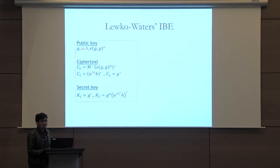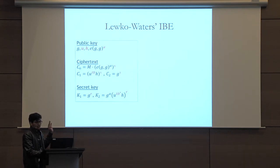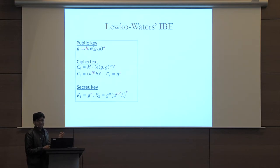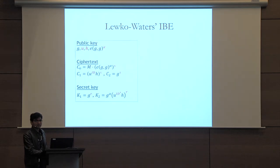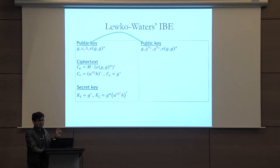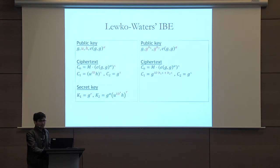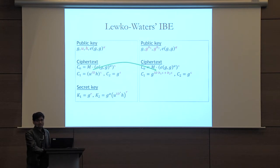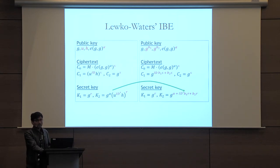Here is a somewhat simplified version of Lewko-Waters IBE. Just focus on the parts highlighted in red. In the public key, we have u, h, and alpha, chosen at random. In the ciphertext, we have s chosen at random, and id is the input. In the secret key, we have r chosen at random, and id' is the input. We rewrite this scheme differently: since u and h are chosen at random, I can write u as g^{b1} and h as g^{b2}, where b1 and b2 are again chosen at random. As a result, the c1 component of the ciphertext can be written as g^{id·b1·s + b2·s}, and the second component of the key can be written as g^{alpha + id'·b1·r + b2·r}.